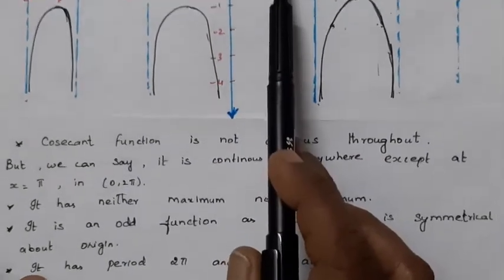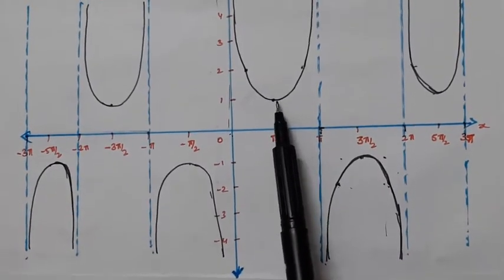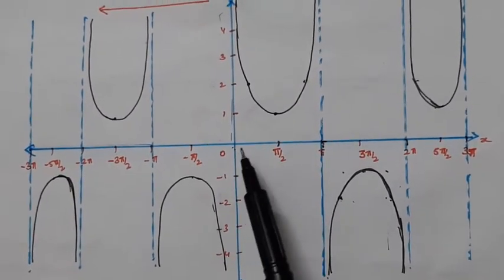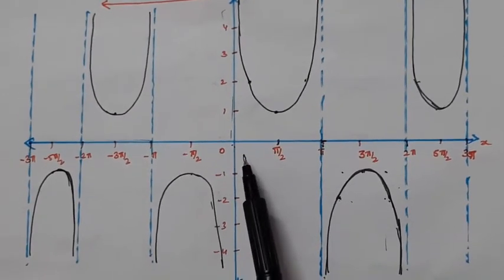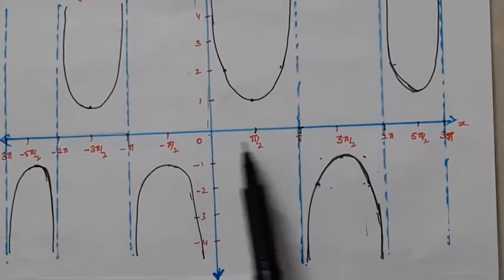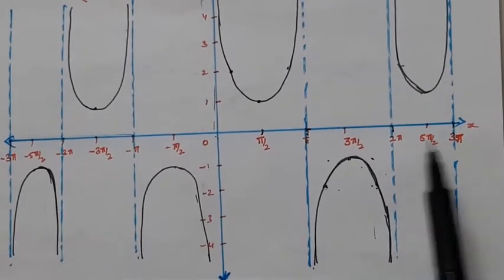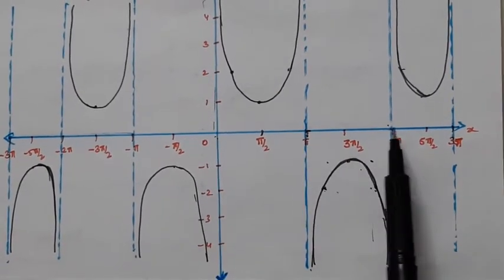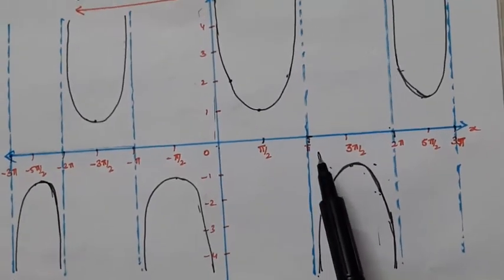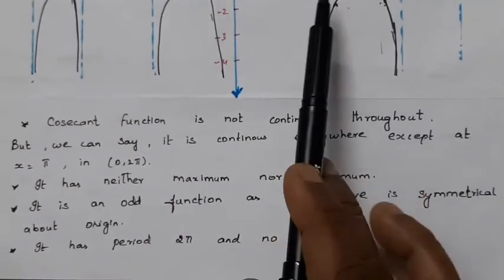The cosecant function is an odd function — since sine x is an odd function, cosecant x is also odd. If you rotate the graph 180°, you get the same pattern, confirming it is symmetric about the origin. The period of the cosecant function is 2π: the pattern from 0 to 2π repeats again and again. Since sine x is periodic with period 2π, cosecant x is also periodic with period 2π.